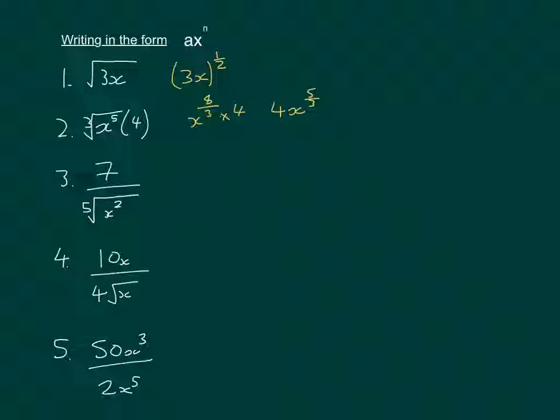Number 3, we've got 7 over the 5th root of x squared. So for this one, we're going to keep it as the fraction for now. We'll have 7 over x to the power of 2 fifths. But we want it in this form here, where there's something times x to the power of n. So we're going to have to bring this x up here, and the way that we do that is by saying 7x to the power of minus 2 fifths. Because of course, that minus would tell us to do the reciprocal of x, so that would make it go into the denominator.